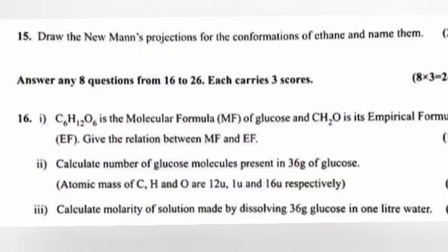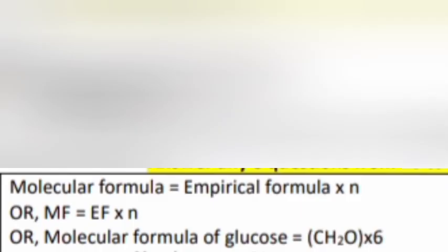Question 16, part 1: C6H12O6 is the molecular formula of glucose and CH2O is its empirical formula. Give the relation between molecular formula and empirical formula. Answer: Molecular formula = empirical formula × n, or MF = EF × n. Molecular formula of glucose = CH2O × 6.